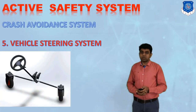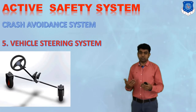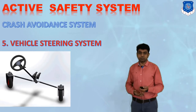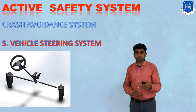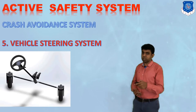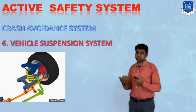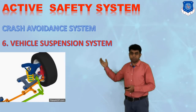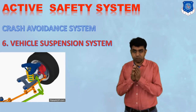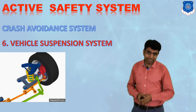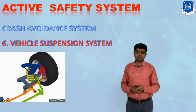The fifth system is the vehicle steering system, which must also work properly. If it leads to understeer or oversteer conditions, or if wheel alignment is off, it can lead to an accident. The sixth basic system is the vehicle suspension system — similarly studied separately, but categorized under crash avoidance. If suspensions are working properly, we can mitigate a significant number of accidents.